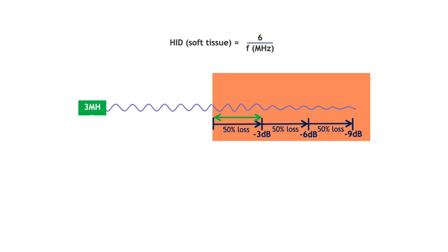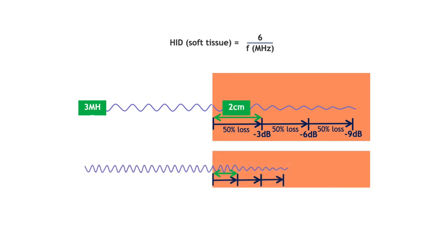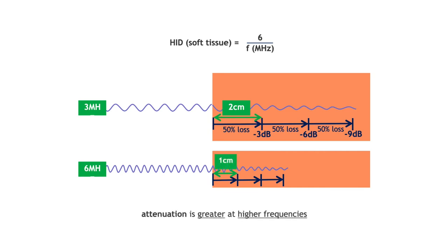To illustrate: at 3 MHz, HID = 6 ÷ 3 = 2 cm. At 6 MHz (higher frequency), HID = 6 ÷ 6 = 1 cm — a shorter half intensity depth. This proves that attenuation is greater at higher frequencies, explaining why higher frequencies penetrate less far. That concludes the chapter on the traveling ultrasound wave.